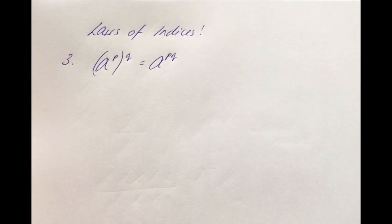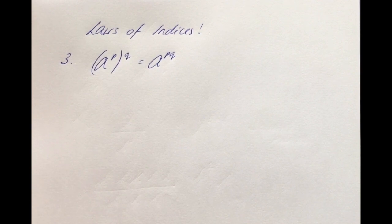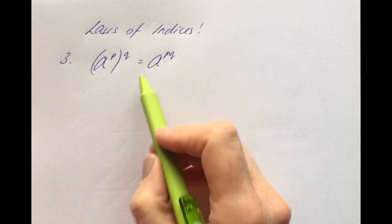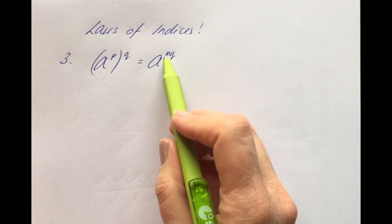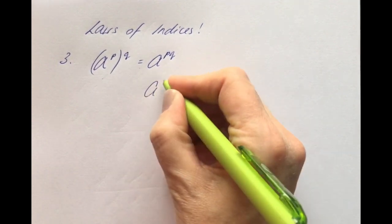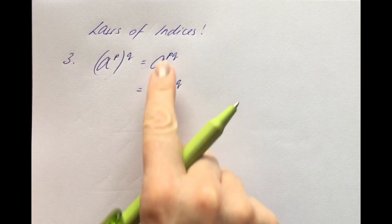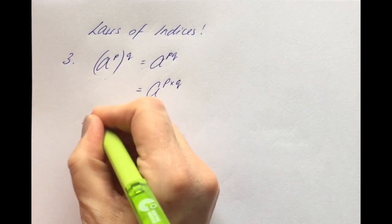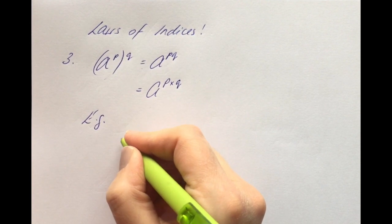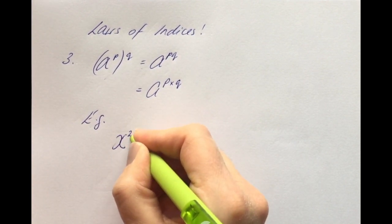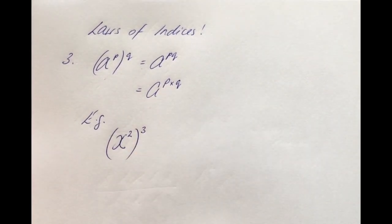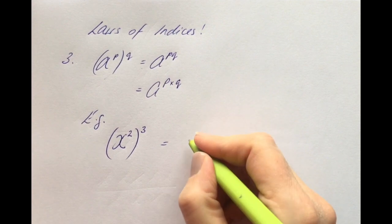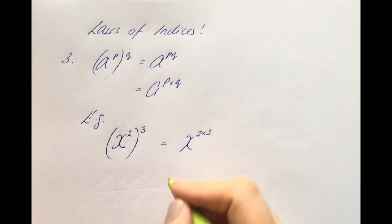The third law of indices, as it appears in your log tables on page 21, states: if you have a to the power of p, and that is all raised to the power of q, it equals a to the power of pq — where pq means p times q. So let's look at a clear example: x squared, all to the power of three.